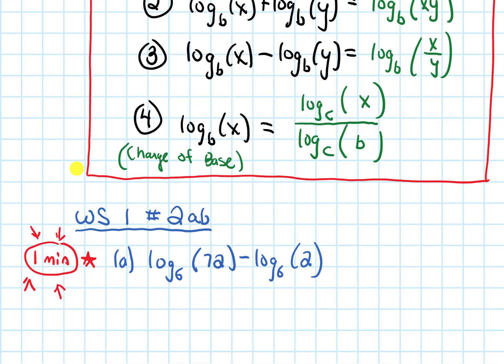Alrighty, so hopefully you did that. Hopefully you tried it for about a minute. Let's talk about it together. So we are going to use this third log rule. I have a log minus a log and they got the same base, so I can combine it into one log and I divide the insides. So I'll get 72 divided by 2.